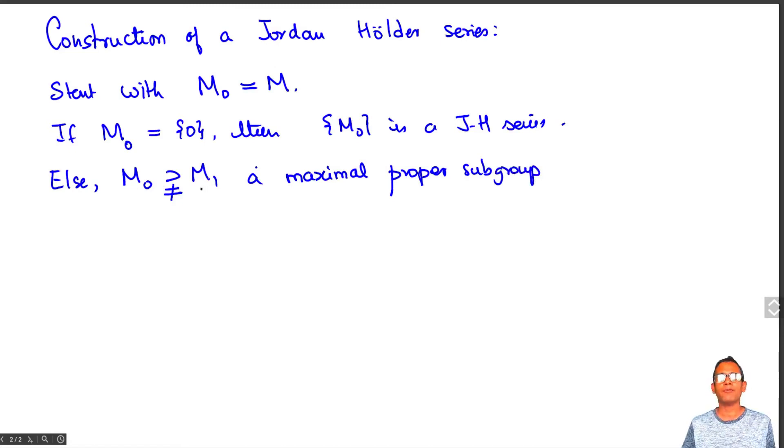So M0 mod M1 is simple. If M1 equals 0, then M0, M1 is a Jordan-Hölder series.